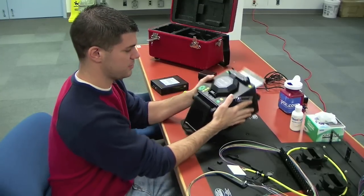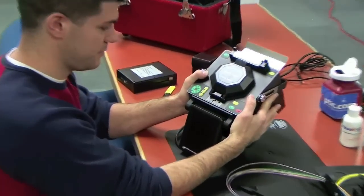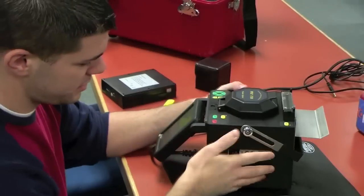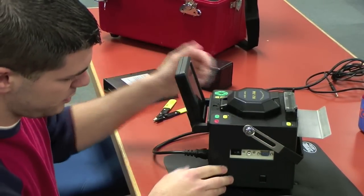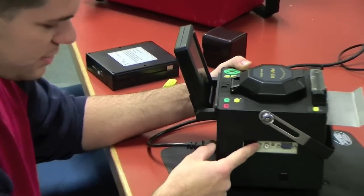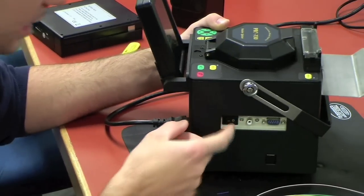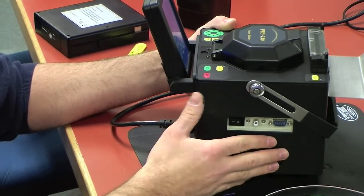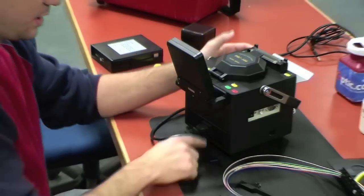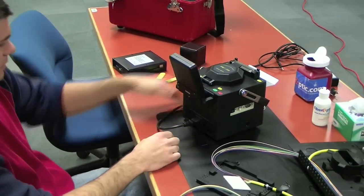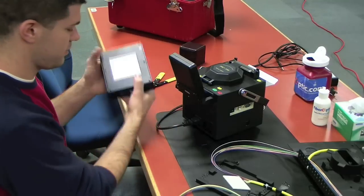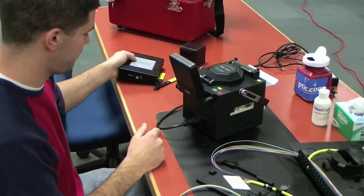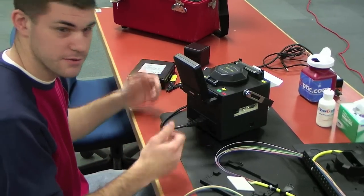We're going to start off with the Pro 730 Splicer right here. The first thing we will do is turn it on and there's a toggle switch right here for the on off. So we're going to go ahead and turn this on. We're operating on AC power, have our power cord plugged in. Here we have battery, if you want to run on battery power out in the field.